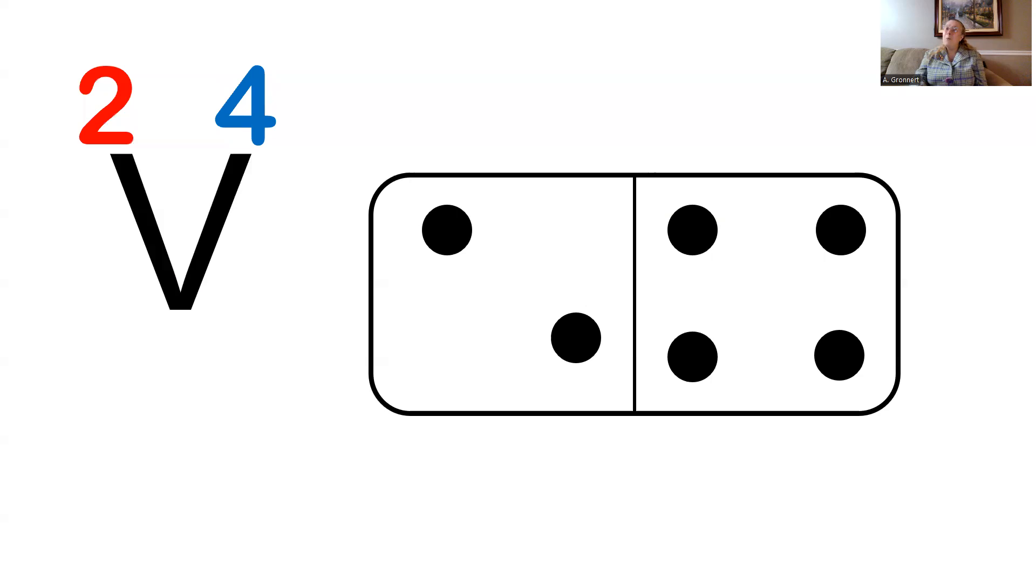Excellent! What's the total? That's right! The total number of dots on this domino is 6. So my parts are 2 and 4 and the total is 6.